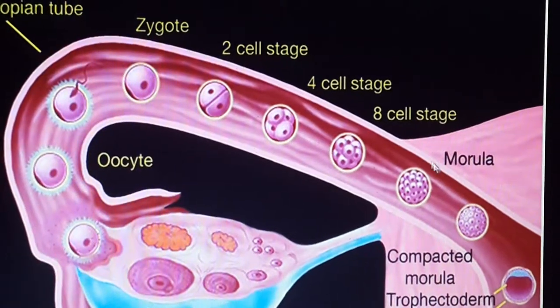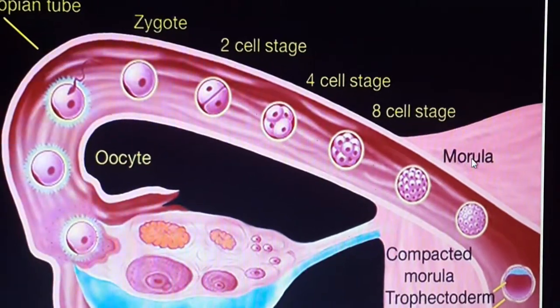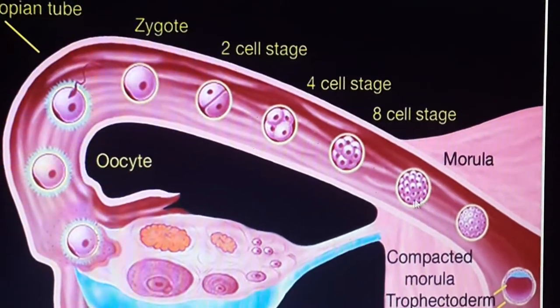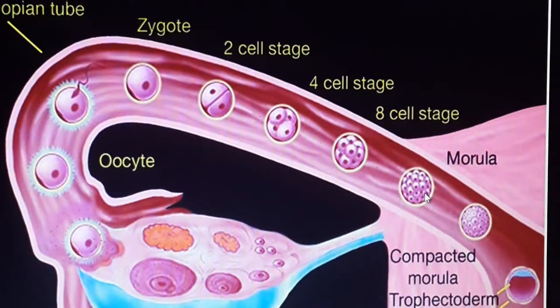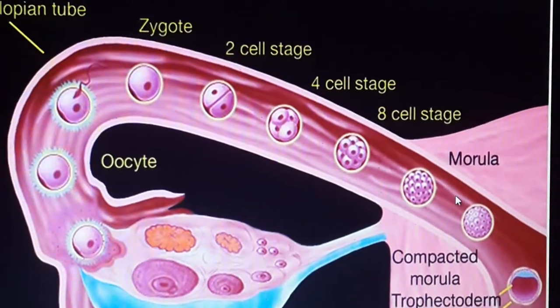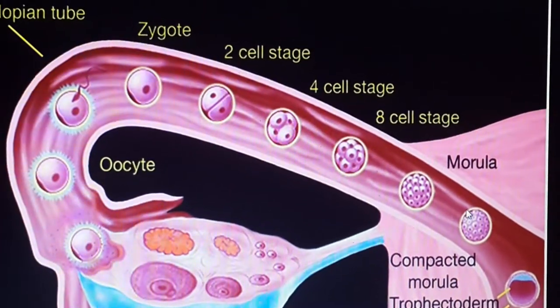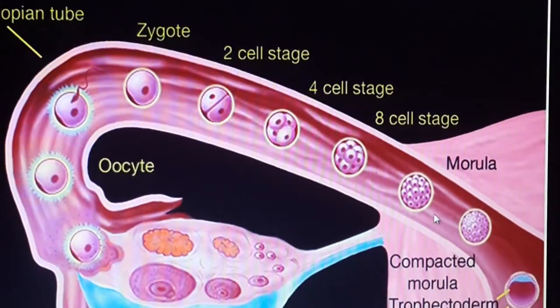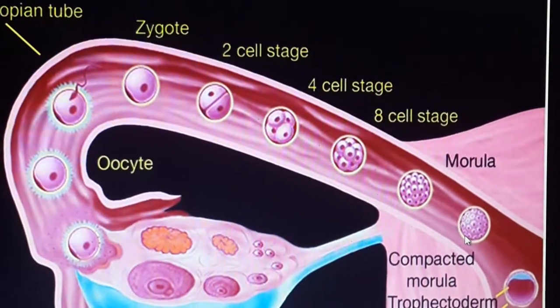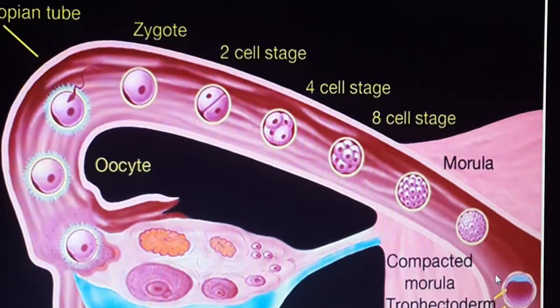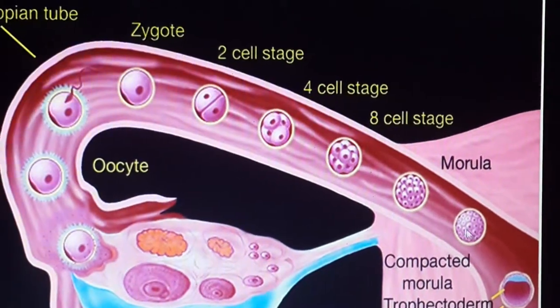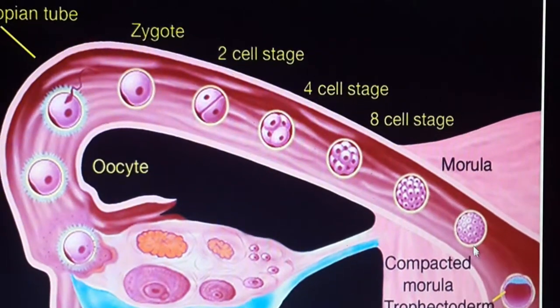Here we call them morula. Why do we call them morula? Because this structure itself resembles, for example, a mulberry. And as the division continues, here is the compacted morula.